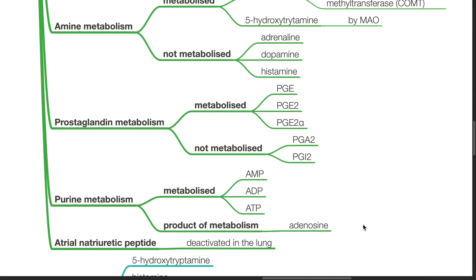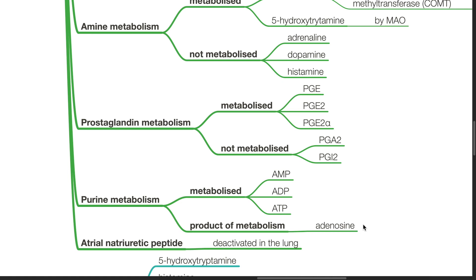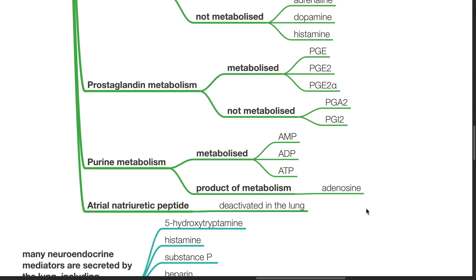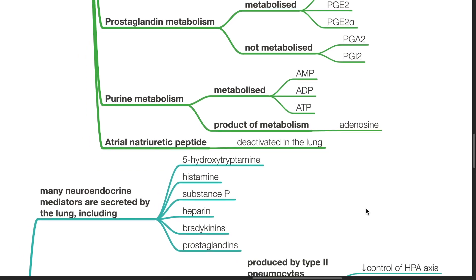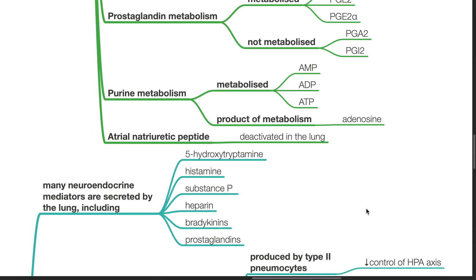Prostaglandin metabolism also occurs in the lung. PGE, PGE2 and PGF2α are metabolized in the lung. PGI2 and TXA2 are not metabolized. AMP, ADP and ATP are metabolized in the lung, and the product of metabolism is adenosine. Atrial natriuretic peptide is deactivated in the lung.